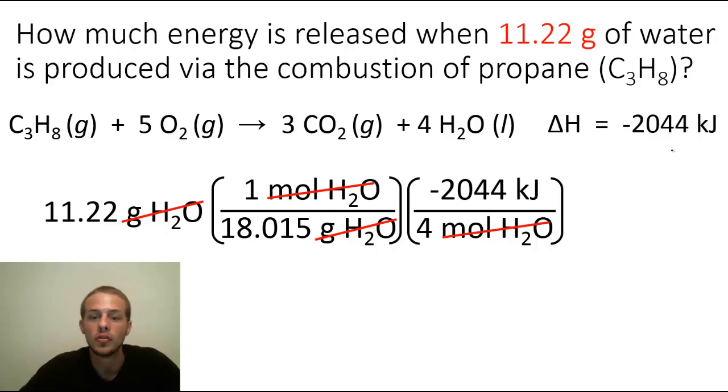So essentially it's 11.22 times minus 2,044 divided by 18.015 and we're going to take this to it looks like four significant figures. And so after crunching that into the calculator, rounding it to four sig figs, your final answer is going to be negative 1,273 kilojoules.